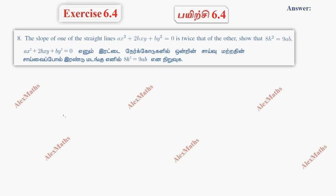Hi students, this is Alex here. XI 6.4, question number 8. The slope of one of the straight lines AX² + 2HXY + BY² = 0 is twice that of the other, so show that — in the expression, prove...